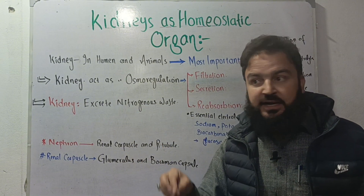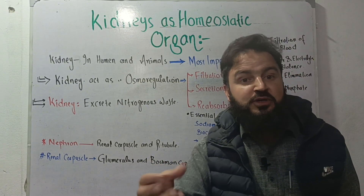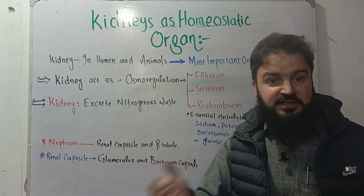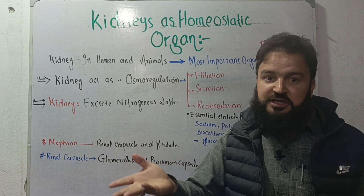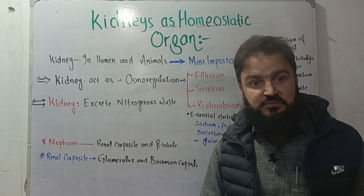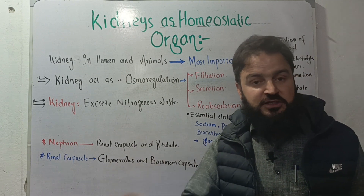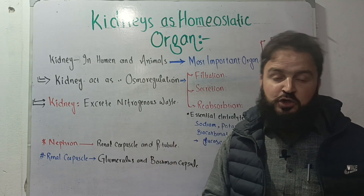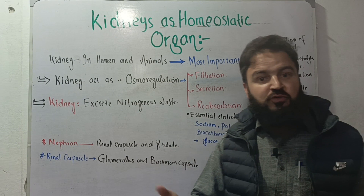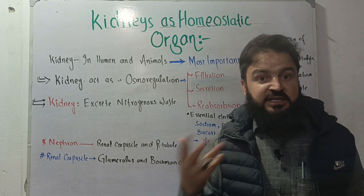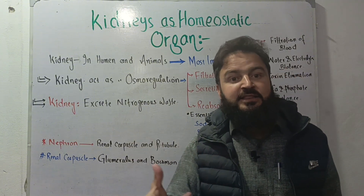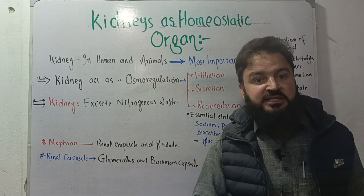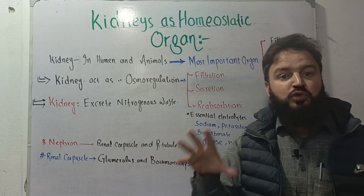Nitrogenous waste includes substances like ammonia and creatinine. Ammonia is toxic — it can damage DNA and lipids, affect the brain, and cause coma if not eliminated. Creatinine levels in the blood are also dangerous if elevated. The kidney excretes these nitrogenous wastes to keep the body safe.